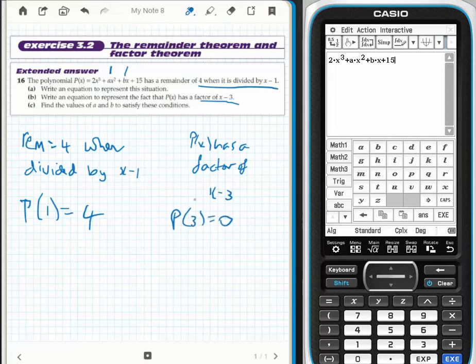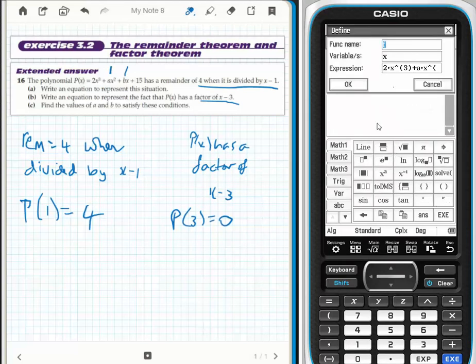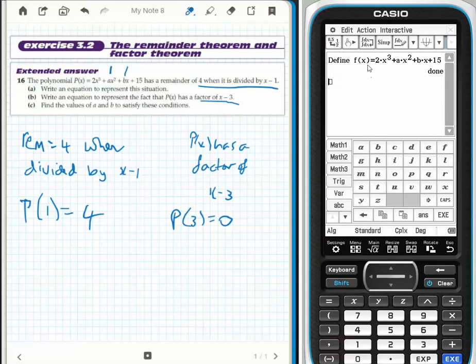I'd like to define this function directly. Then I'll use my first piece of information: when you divide by X minus 1, therefore F(1) should equal my remainder, which is 4. That's the equation they're asking you to write in part A.